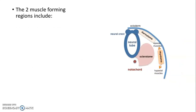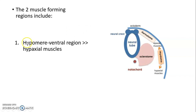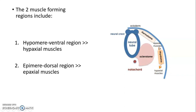The two muscle-forming regions include hypomere, which is the ventral region and gives rise to hypaxial muscles, and epimere on the dorsal side, which gives rise to epaxial muscles. Together these form the myotome.